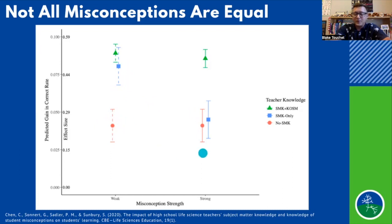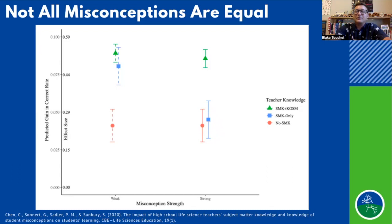If we're looking at strong misconceptions — those that are sticky and difficult to deal with — teachers who only have a high subject matter knowledge do not significantly resolve those misconceptions with their students. The only teachers able to significantly move their students in terms of resolving those strong, sticky misconceptions are teachers with high subject matter knowledge and a high knowledge of student misconceptions.